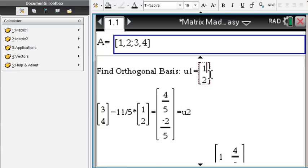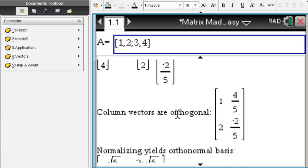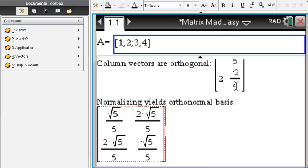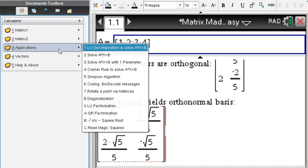Okay, so everything is done step by step. Find your vector u2 and you get your matrix, each vector is orthogonal to each other. You normalize both columns, both vectors, and then you arrive at your orthonormal basis.